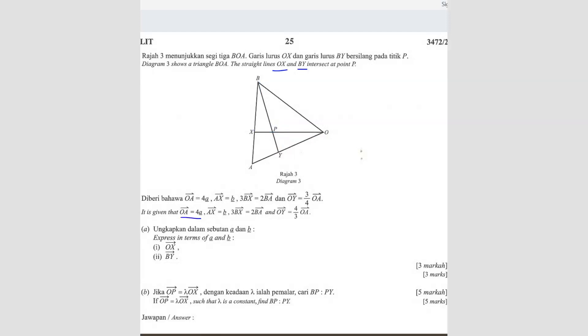So given that OA is 4A, where is OA? The whole thing here is 4A. And then they said AX. AX is only this part.